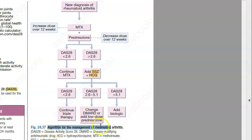Hello people, let's look at the treatment algorithm for the management of rheumatoid arthritis. So basically, as you're able to see here, a person is diagnosed with rheumatoid arthritis. What will you give the person? You will give methotrexate and prednisolone.